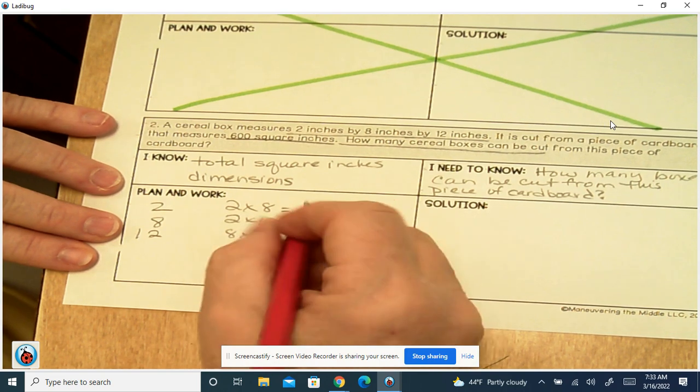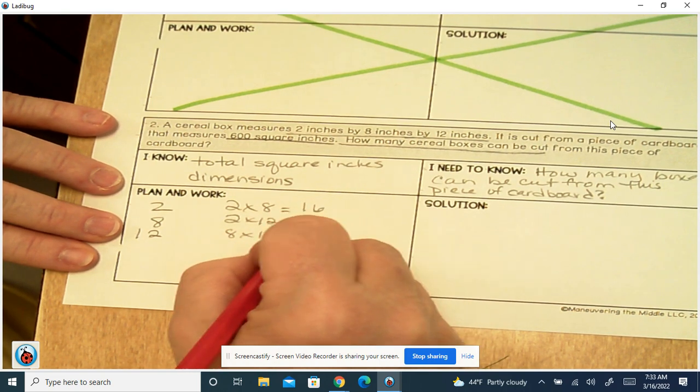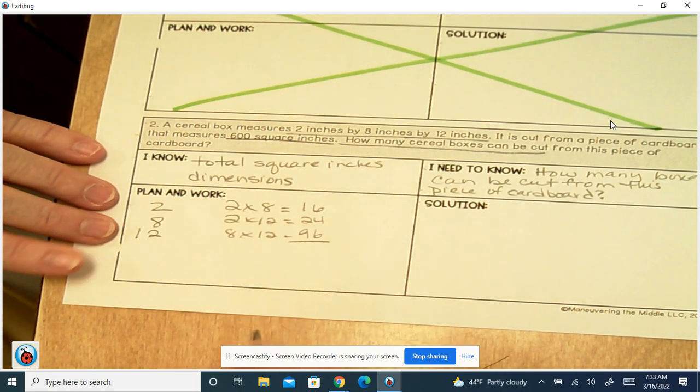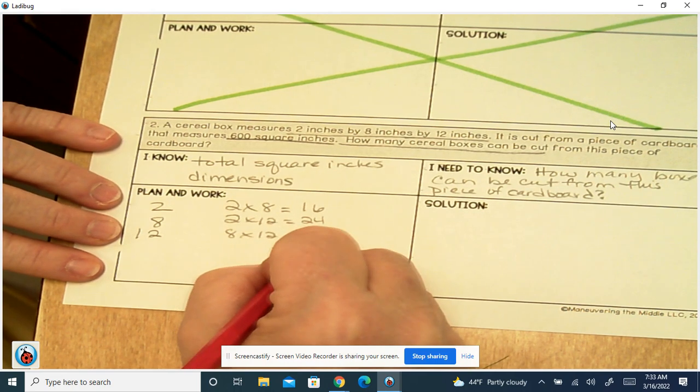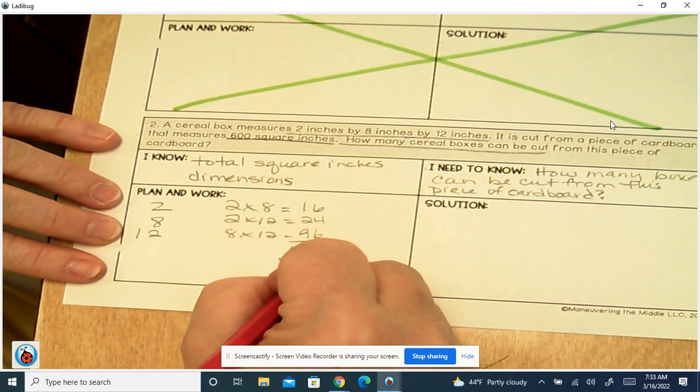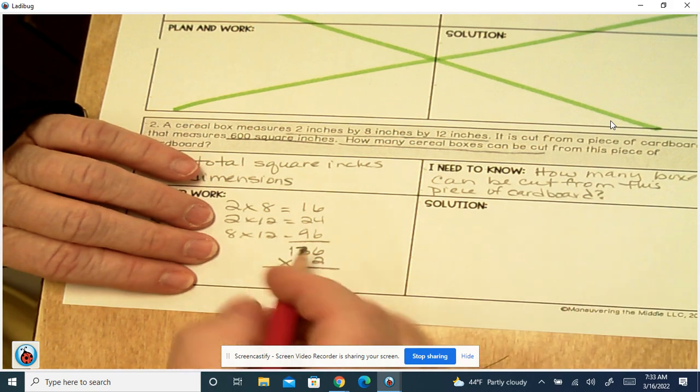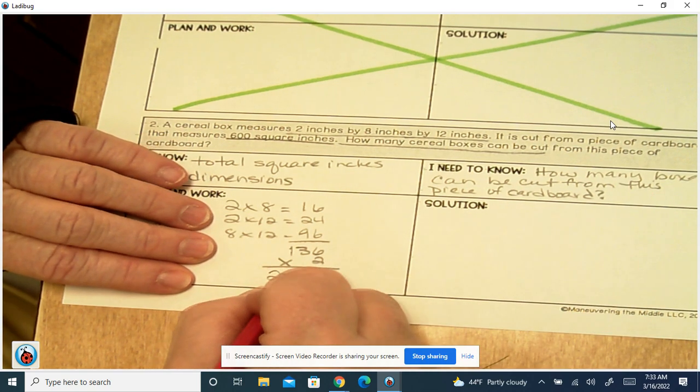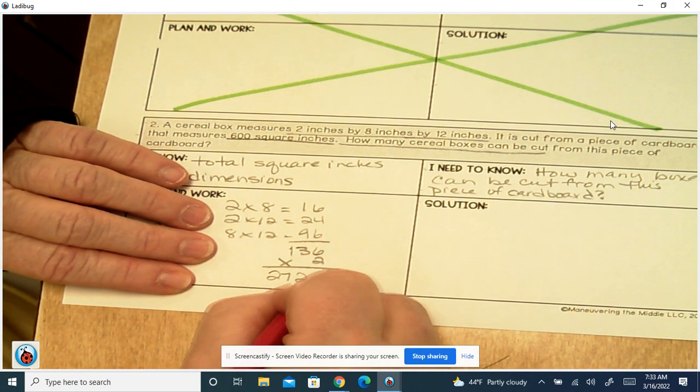We've got 16, 24, and 96. We're going to add those up. That's going to give us the total for three sides. But we know that we have six, so we're going to multiply it by two and you get 272 inches squared.